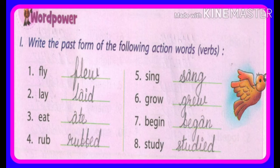Number one: Fly — flew. Fly बोलने से उड़ना, flew. Number two: Lay — laid. Number three: Eat — ate. Number four: Rub — rubbed.